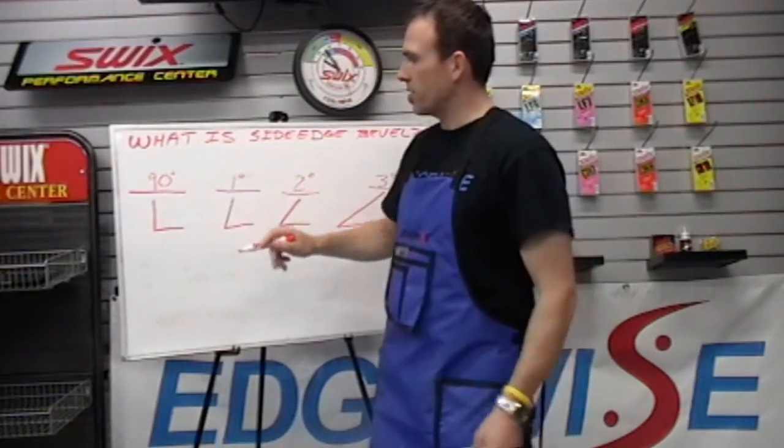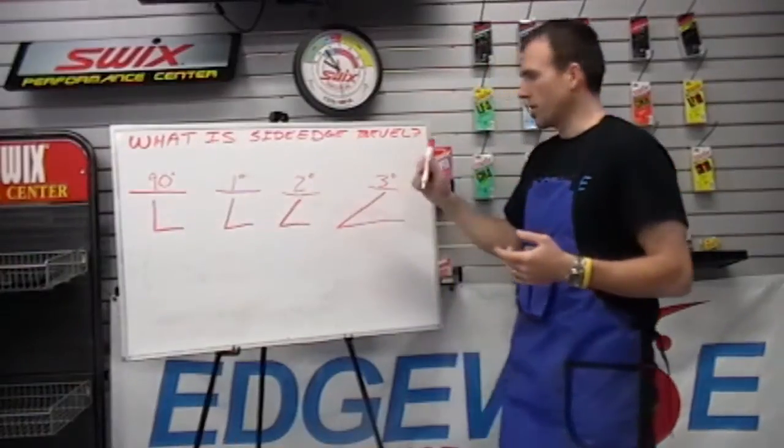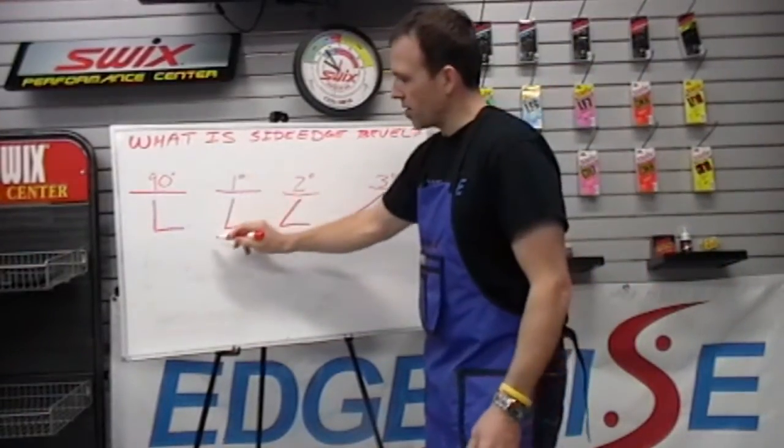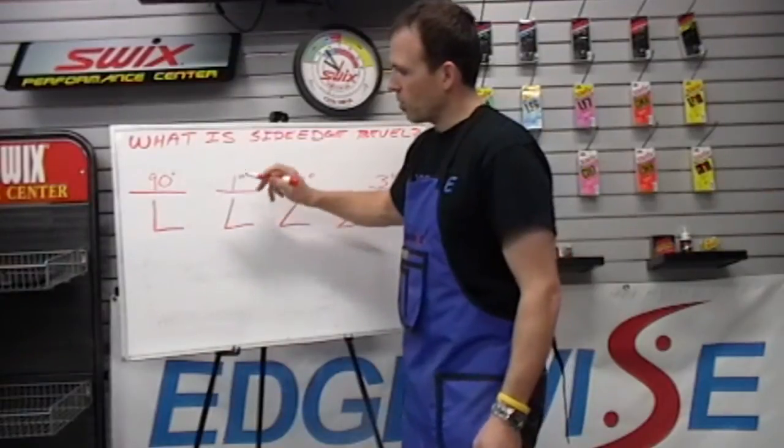So basically you're looking at a 90 degree, 1 degree, 2 degree, 3 degree. And what that degree refers to is the sharpness of that angle when you file the skis.